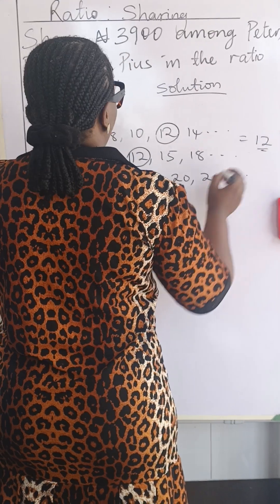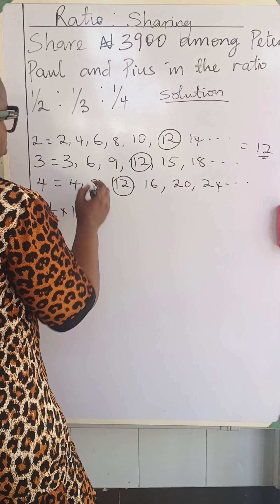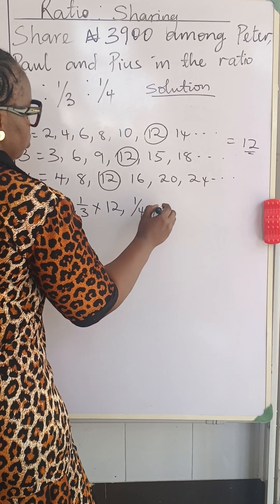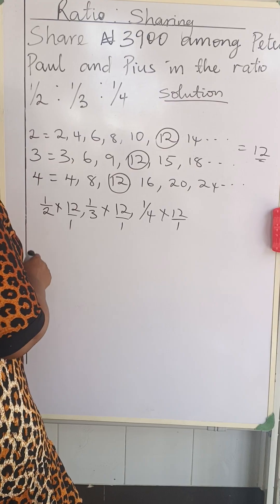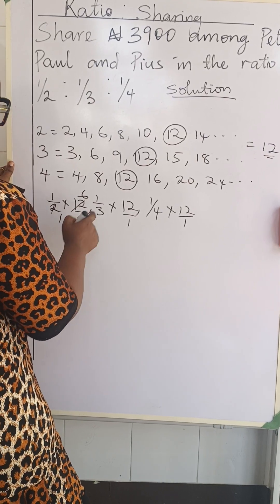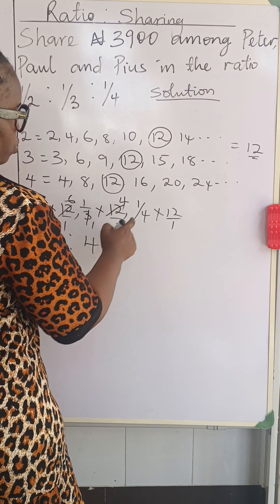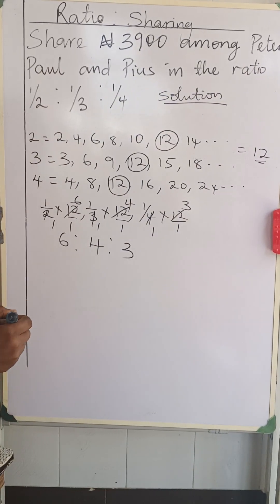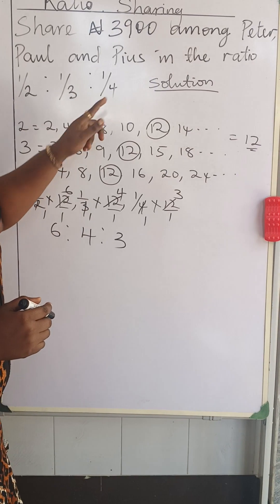Now we multiply each fraction by the LCM of 12: one over two times 12, one over three times 12, and one over four times 12. Writing 12 as 12 over 1: two into twelve is six, six times one is six. Three into twelve is four, four times one is four. Four into twelve is three, three times one is three. So the parts are 6, 4, and 3 — representing one half, one third, and one fourth respectively.